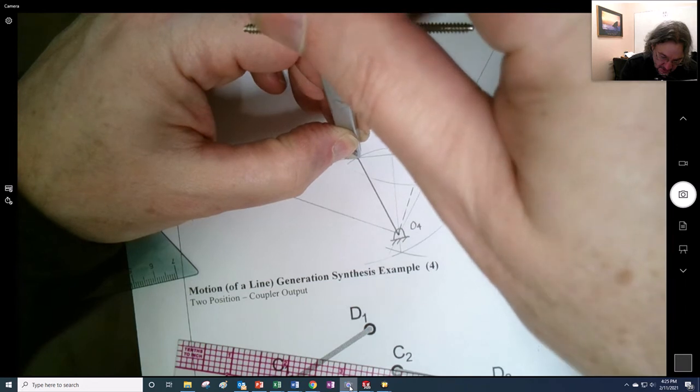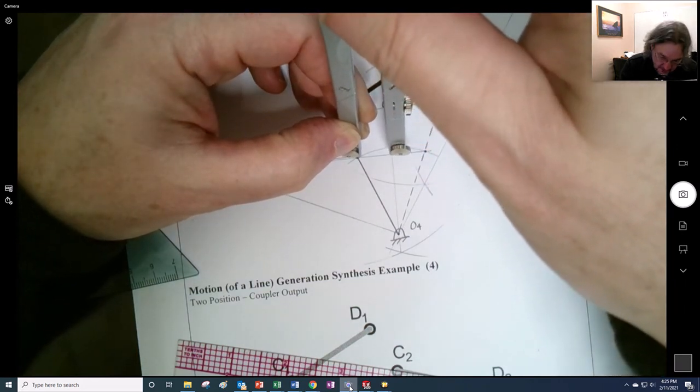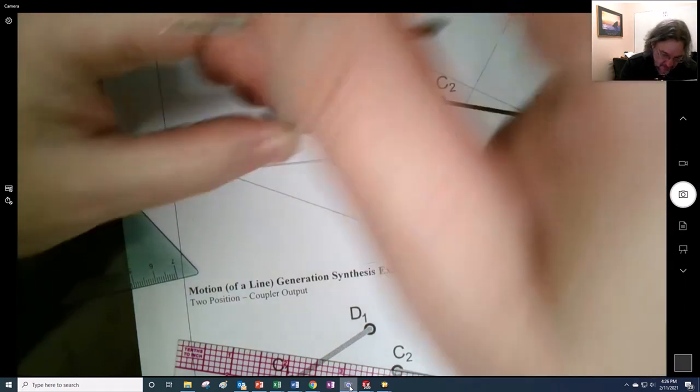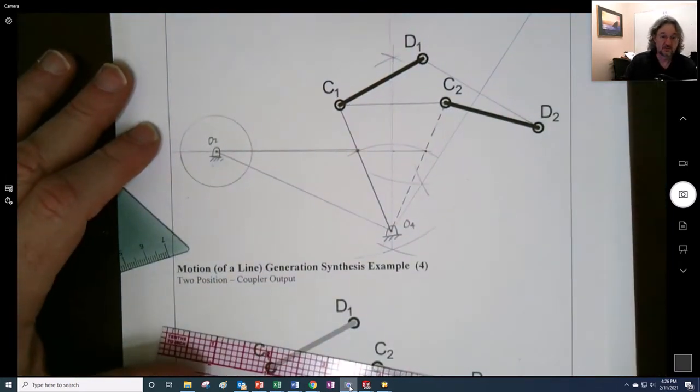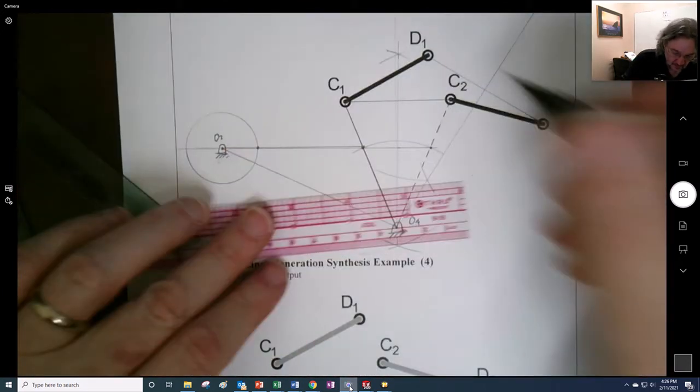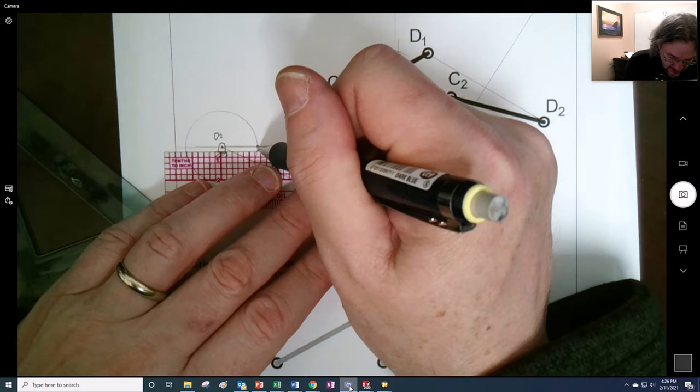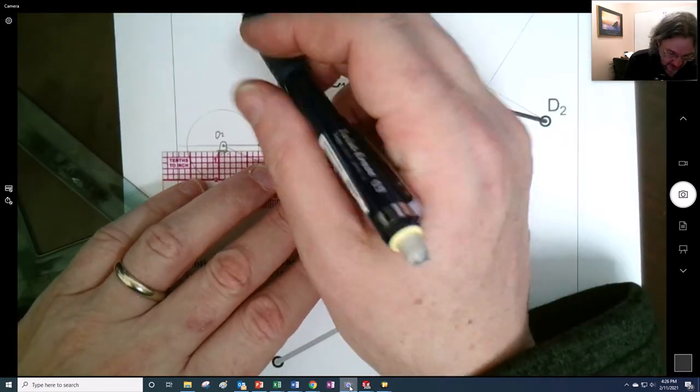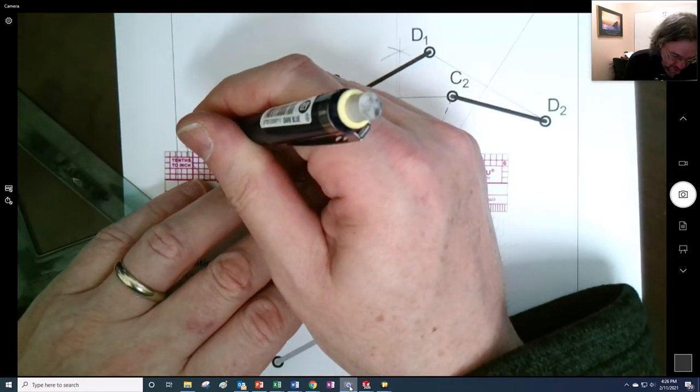So, I find my crank distance. There you go. All right. So, here is the crank extended, right? So, and here is the crank overlapped over to here, right?